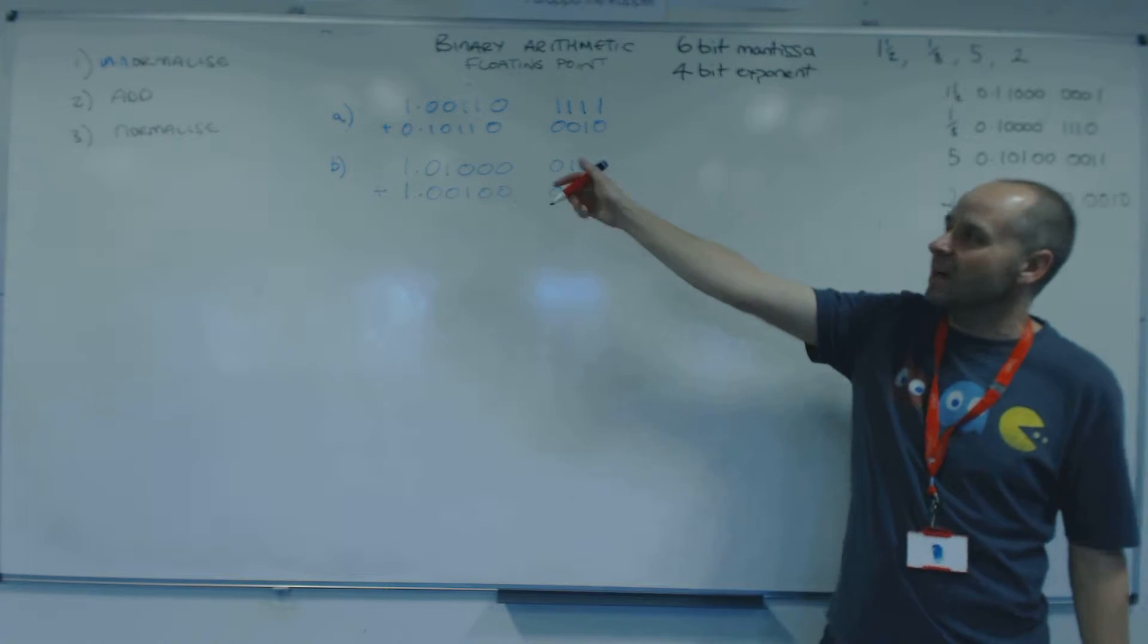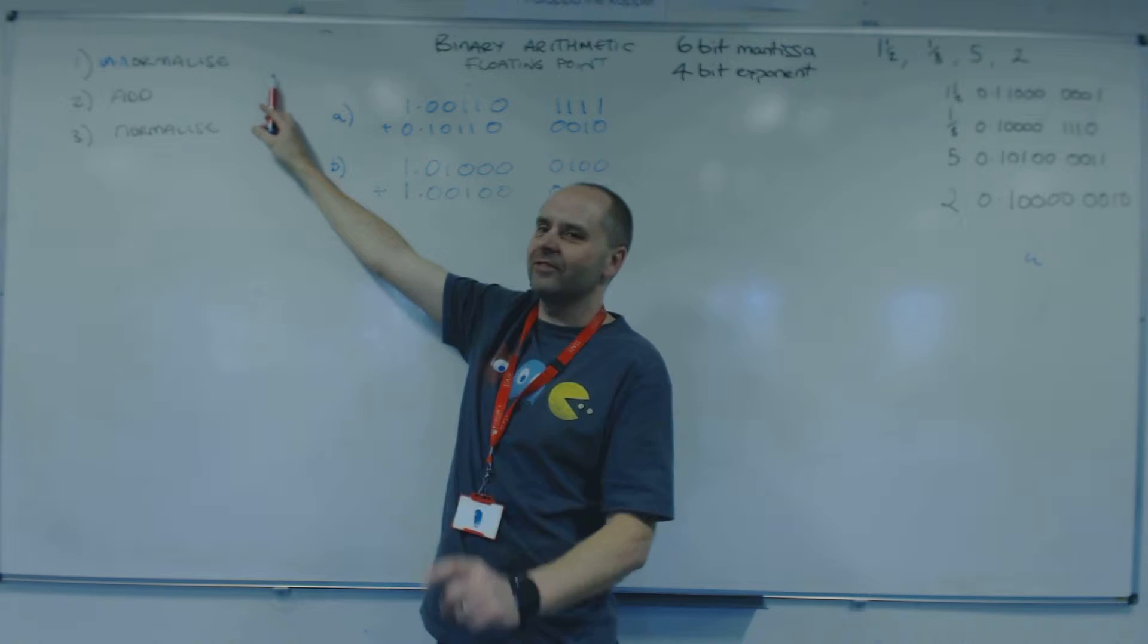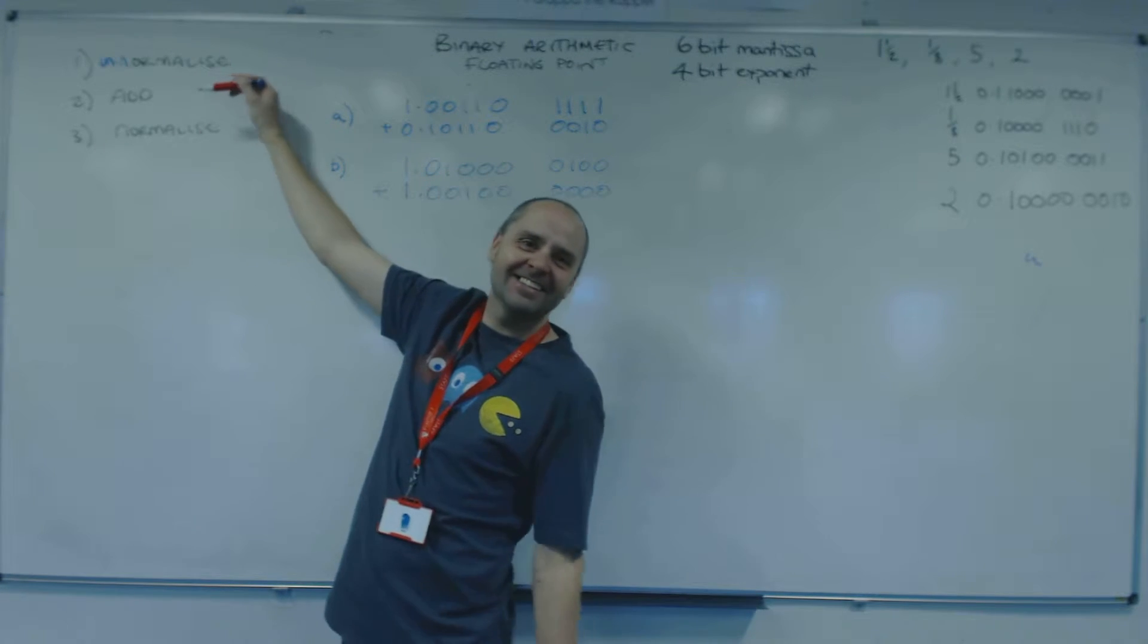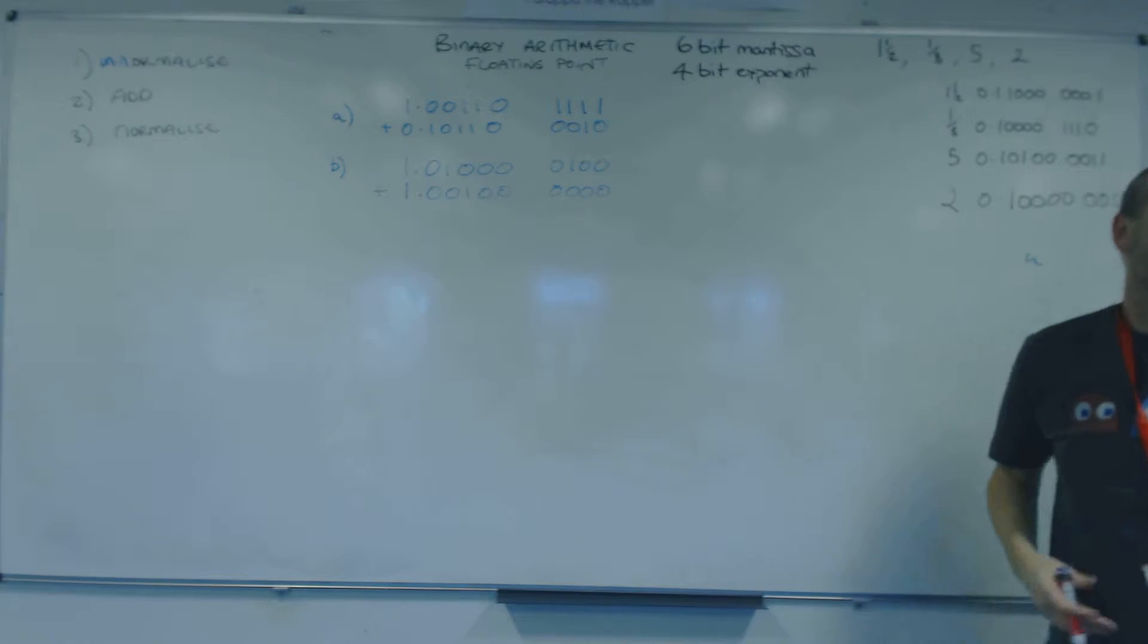Three-step process to add floating point numbers: un-normalise, add, and then normalise again to finish up.